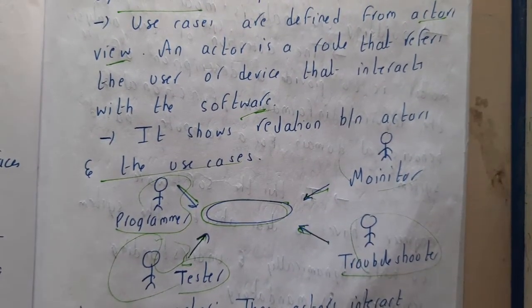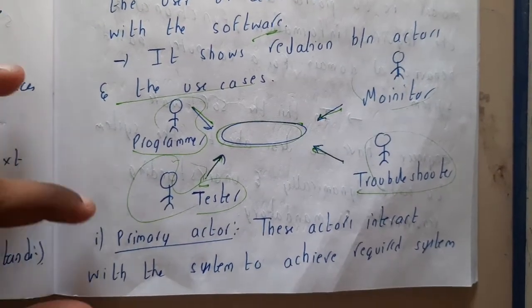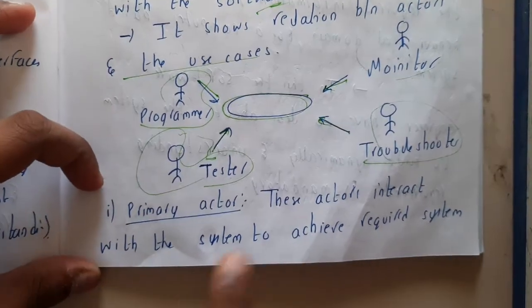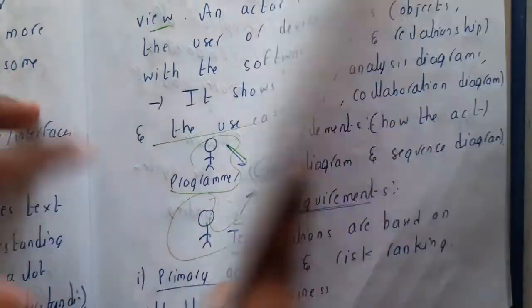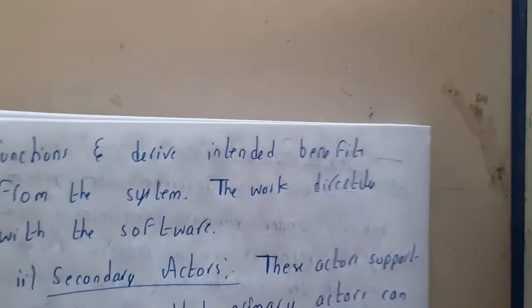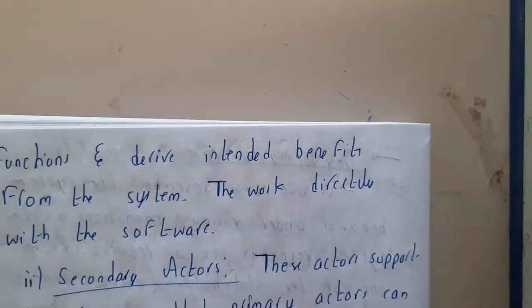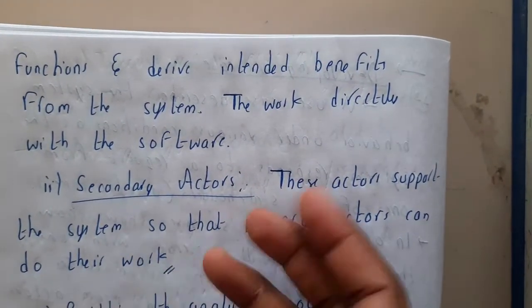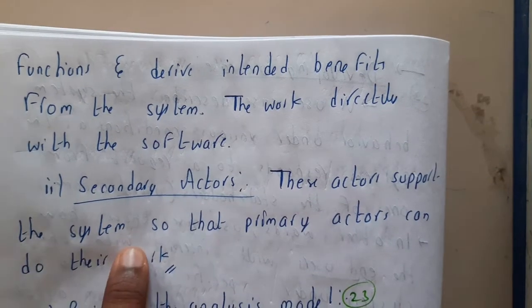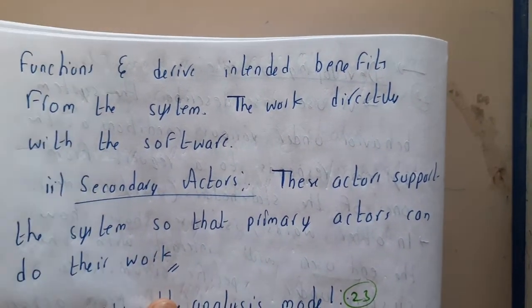Actors are basically divided into two types. The primary actor interacts with the system to achieve the requirements of the system — they discuss functions and drive activities. The secondary actor is at the back end and supports the primary actor, so that the primary actor can work without any issues.